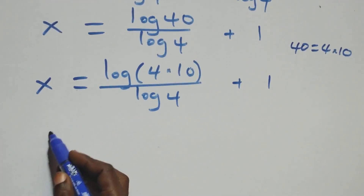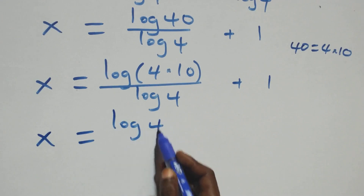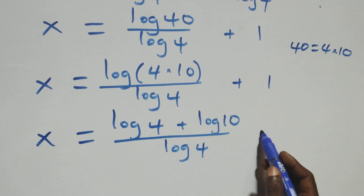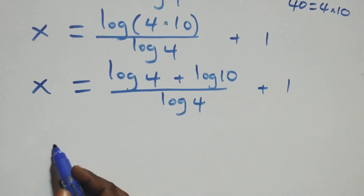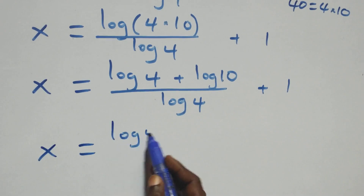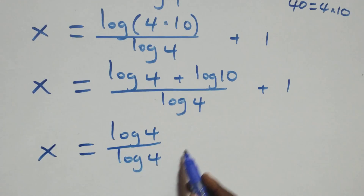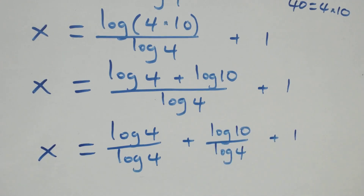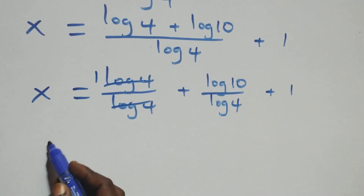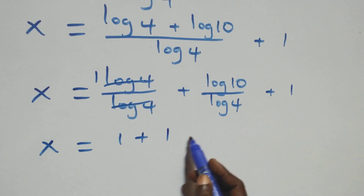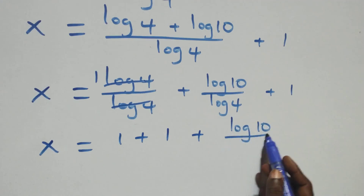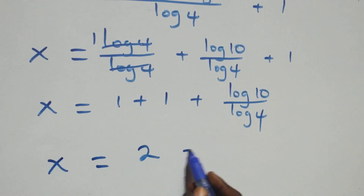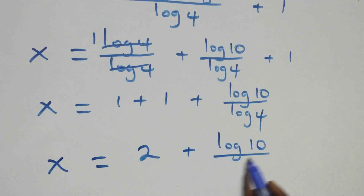This also follows the log product rule, so we have x equals (log 4 plus log 10) over log 4. Separating, x equals log 4 over log 4 plus log 10 over log 4, which simplifies to x equals 1 plus log 10 over log 4.